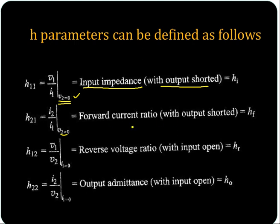Since it is a forward current ratio, it is HF. Now what is H12? H12 is equal to V1 by V2 for I1 equal to 0 — that is with input open. When I1 equal to 0, that is the reverse voltage ratio.